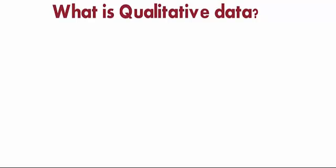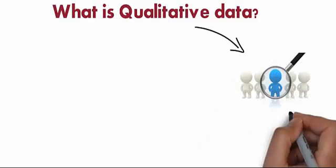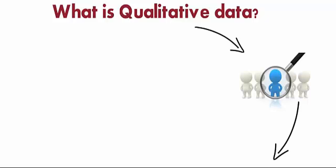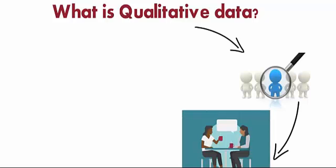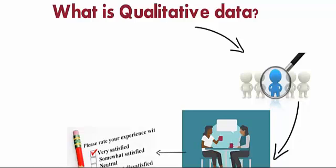What is qualitative data? Qualitative research relies on data obtained by the researcher from first-hand observation, interviews, questionnaires, focus groups, participant observation, recordings made in natural settings, documents, and artifacts.